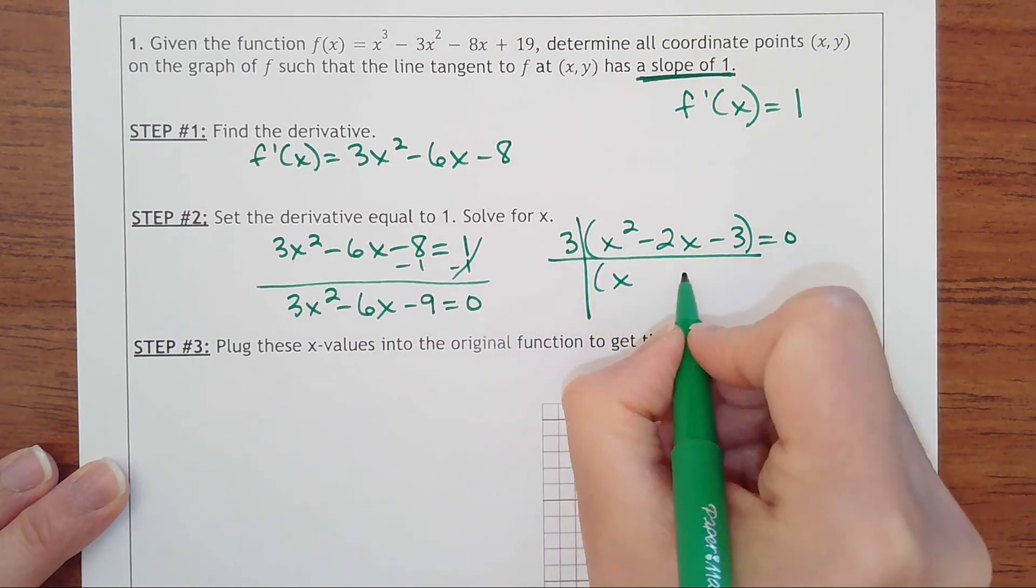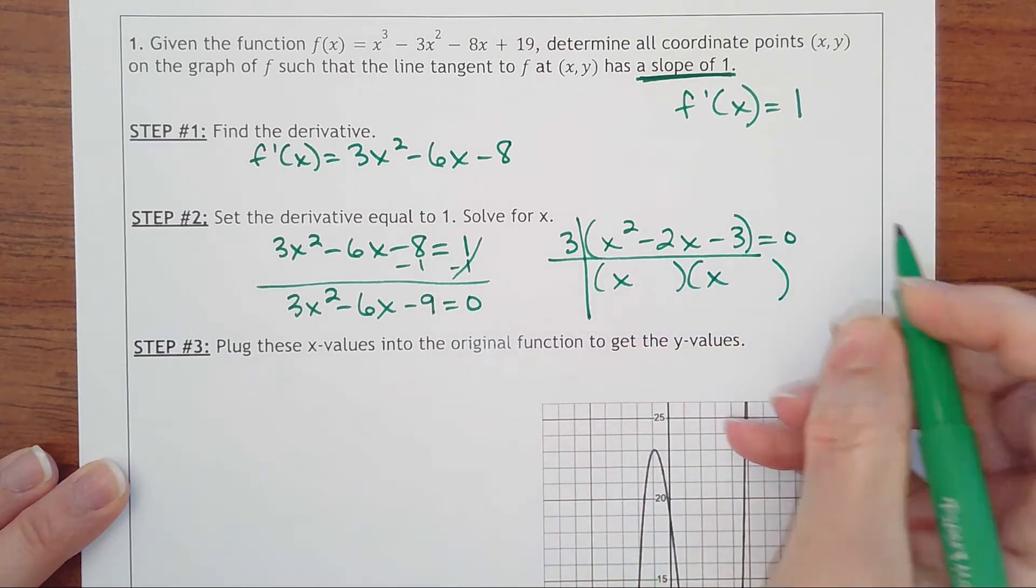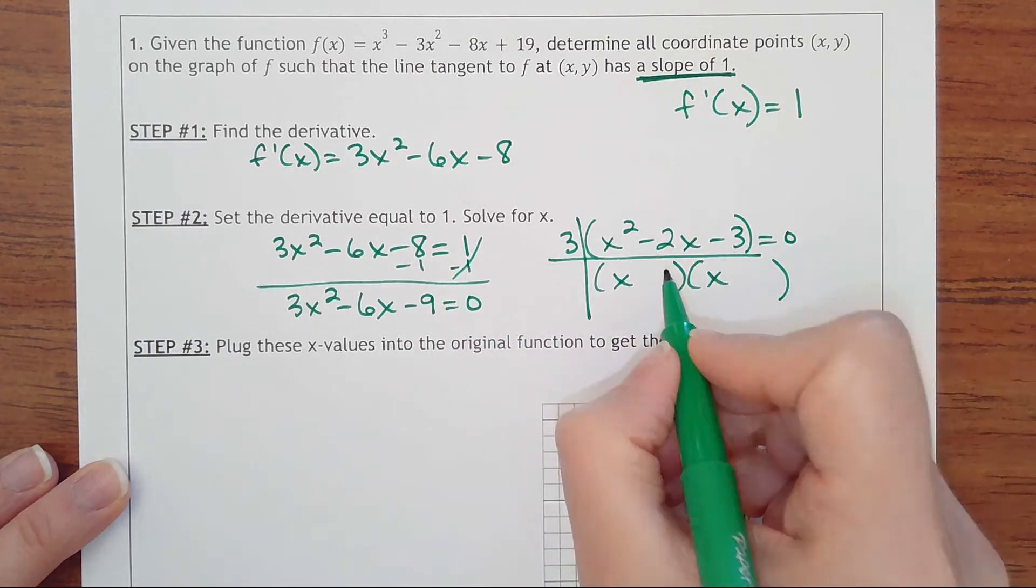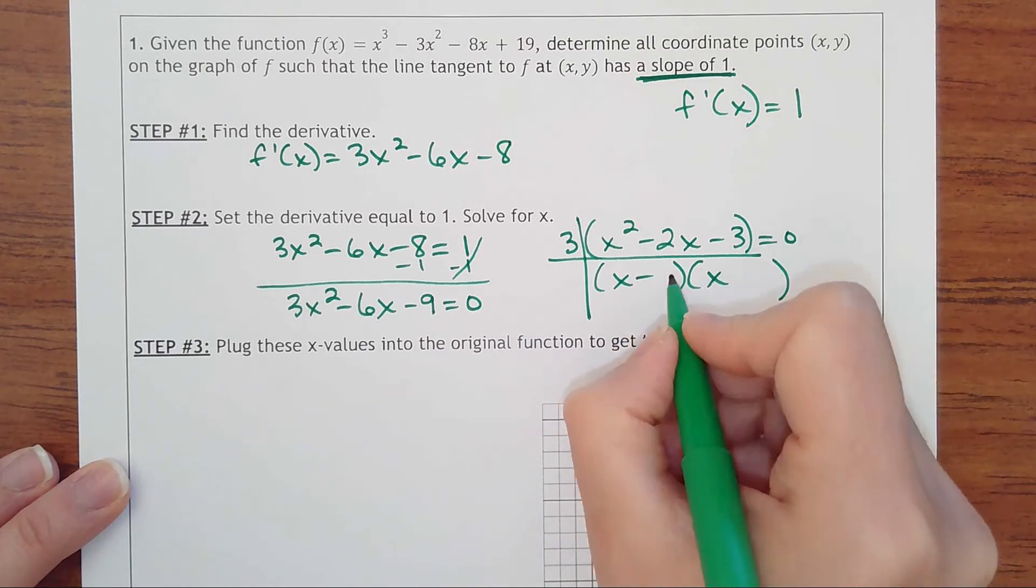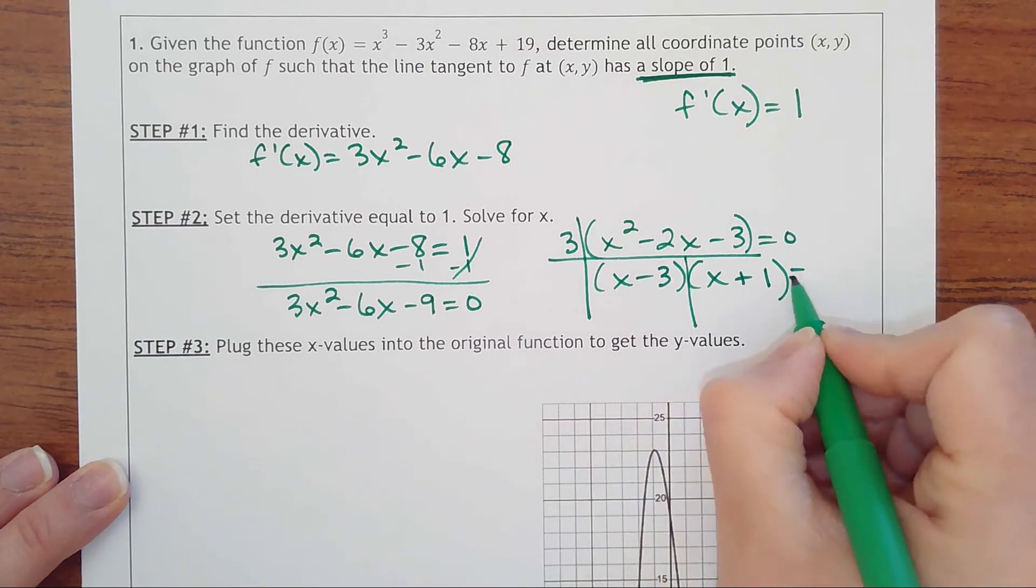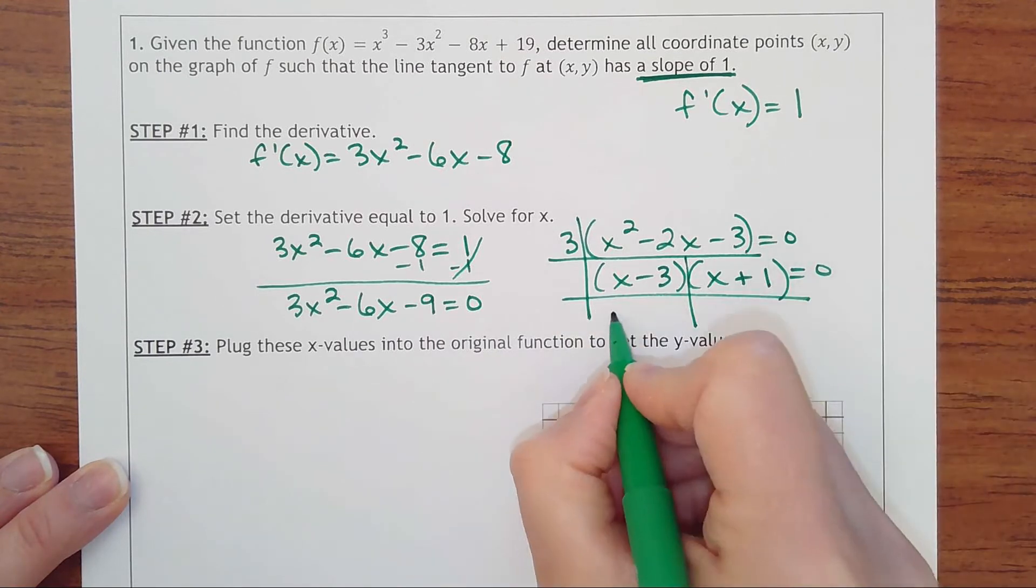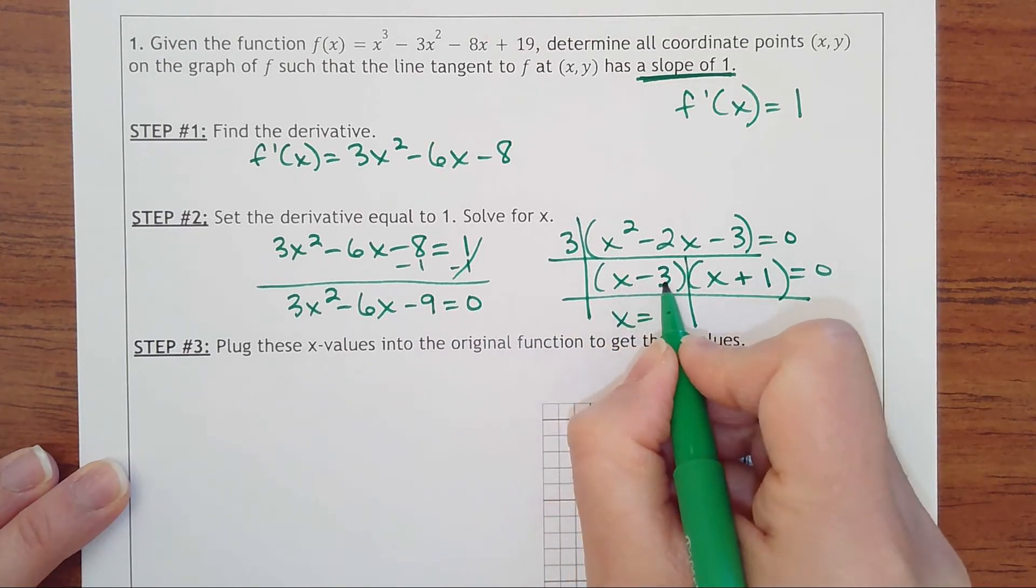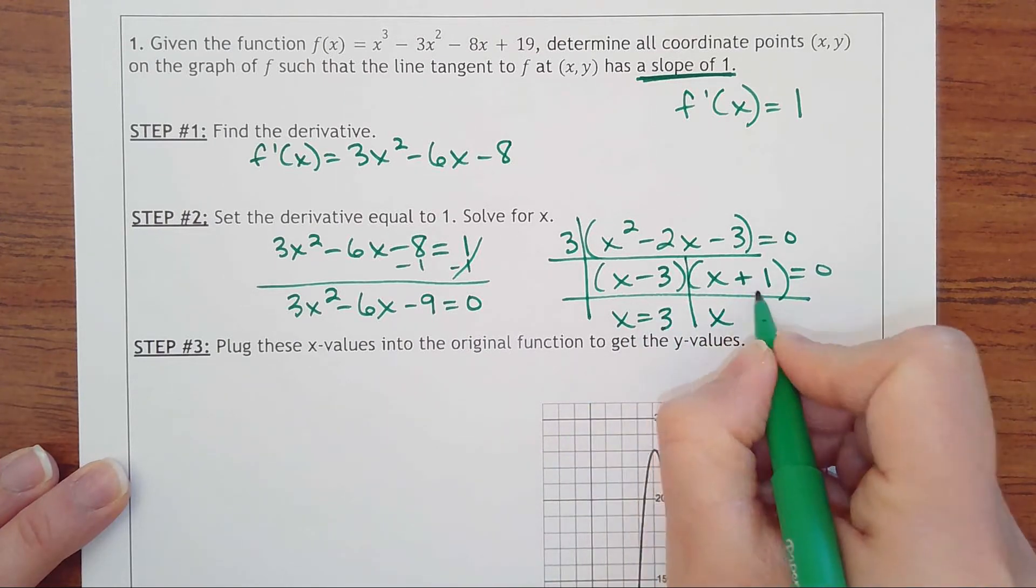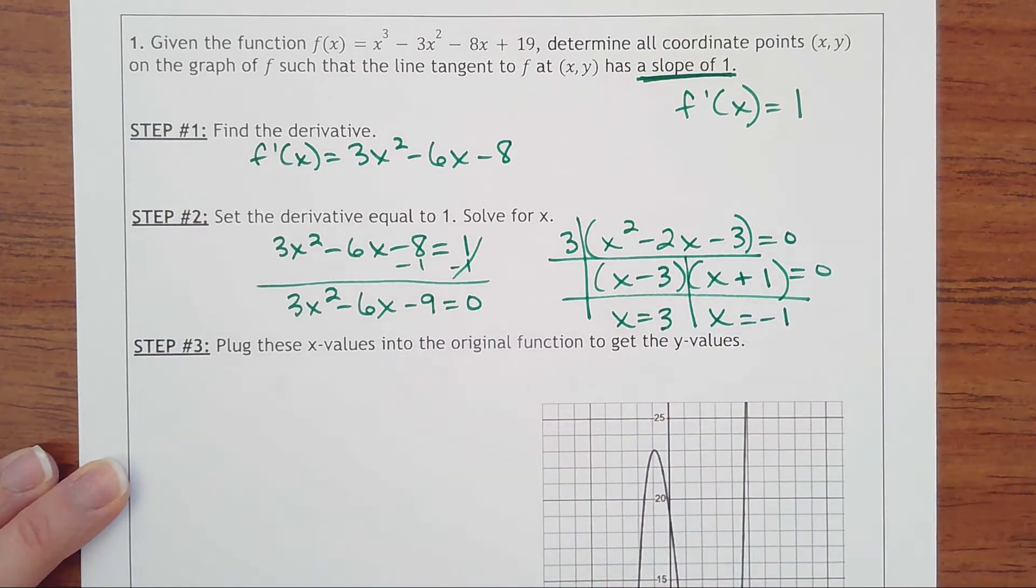It starts with x times x. I need two numbers that multiply to -3 and add to -2. That would be -3 and +1, so (x - 3)(x + 1) = 0. Setting each factor equal to 0: x - 3 = 0 gives x = 3, and x + 1 = 0 gives x = -1.